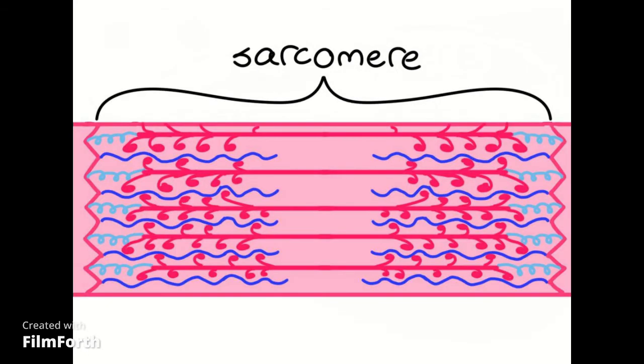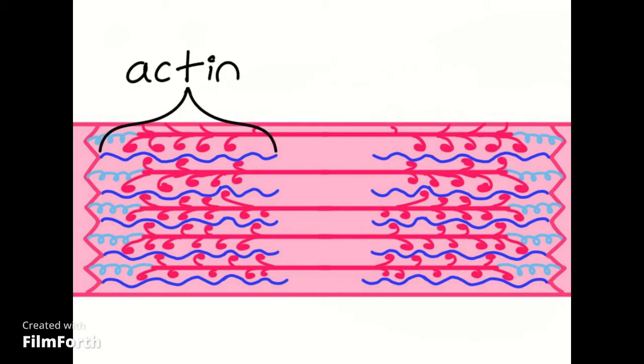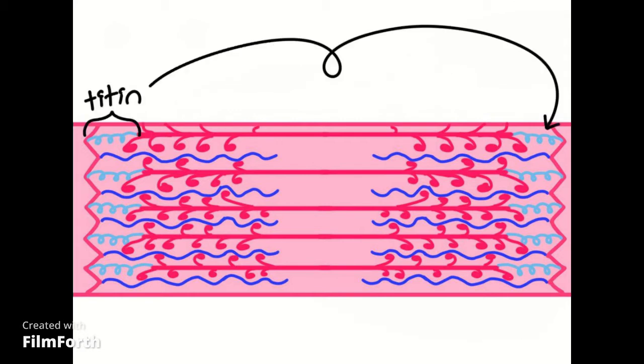Looking closer to the myofibril, you can see that it's divided horizontally into units called sarcomeres. Each sarcomere is divided from its neighbors by a Z-line. Attached to the Z-line is a protein filament called actin and a spring-like protein called titin.